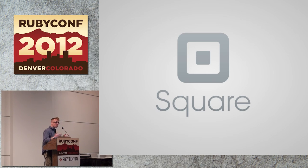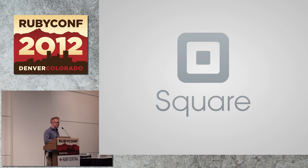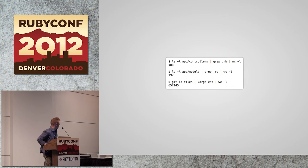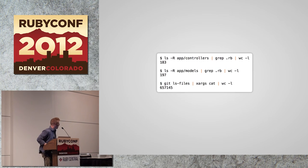Then we wanted to send people receipts, so we had five more controllers for receipts, a couple more views. Then we wanted users to log in and see their history of payments, sort them, search them. So we had 10 more controllers, more APIs, all in the same Rails app. And it started getting really, really big. This is what it looks like today — our monolithic Rails app. We have 183 controllers, 197 models, and 657,000 lines of code.